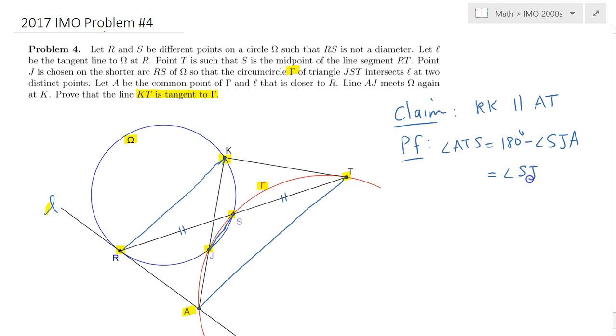Angle SJK subtends on omega, on circle omega, subtends arc KS. But that arc is also subtended by angle SRK, which in turn equals angle TRK. Finally, what we have done is show that two angles here are alternate interior angles, and as such it shows that these two lines are actually parallel.